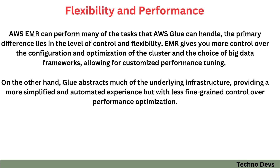Now let's look at Flexibility and Performance. AWS EMR can perform many of the tasks that AWS Glue can handle; the primary difference lies in the level of control and flexibility. EMR gives you more control over the configuration and optimization of the cluster and the choice of big data frameworks, allowing for customized performance tuning. Glue abstracts much of the underlying infrastructure, providing a more simplified and automated experience but with less fine-grained control over performance optimization. In summary, AWS Glue is optimized for efficient data integration and transformation, while AWS EMR is designed for scalable big data processing, with EMR offering more flexibility but requiring more manual configuration compared to the automated nature of Glue.